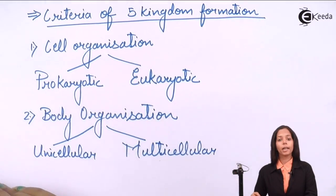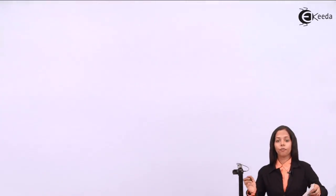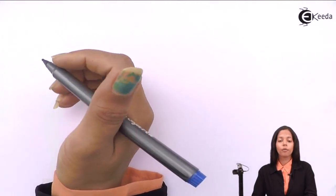The third criteria used by R.H. Whittaker was mode of nutrition. Speaking about mode of nutrition, the meaning is how to obtain food. Mode means way, way of obtaining food. So how does organism obtain food? They can either prepare food, those are called as autotrophs, or they can obtain their food from other organism and these are called as heterotrophs.